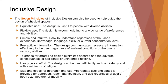There are seven principles of inclusive design, useful to guide the design of physical spaces. First is equitable use: the design is useful to people with diverse abilities. Second is flexible use: the design accommodates a wide range of preferences and abilities. Third is simple and intuitive: easy to understand regardless of the user's experience, knowledge, language skills, or current concentration level.